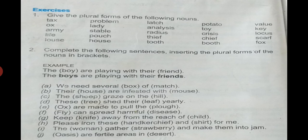Away from the reach of children. Please iron these handkerchiefs - remember, here simple S. The women, M-E-N, gather strawberries, Y we replace with I-E-S, and make them into jam. Oases, E-S, are fertile areas in desert with simple S.